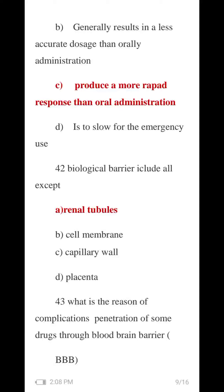Biological barriers include all of the following. Biological barrier number one is in the brain — the blood-brain barrier. You also have the placenta. These are the options related to barriers in the brain.